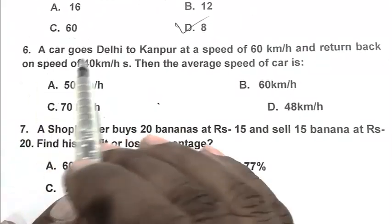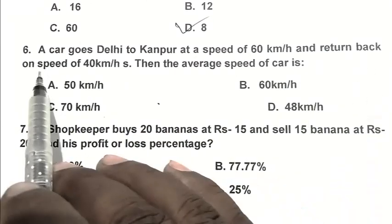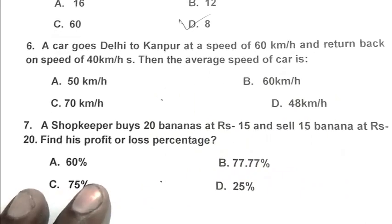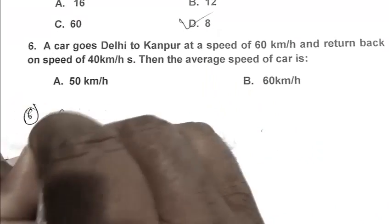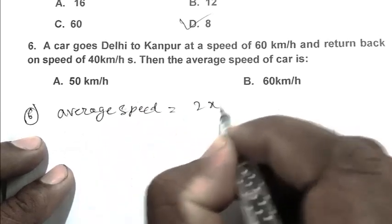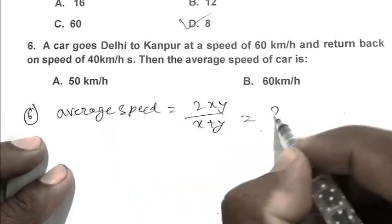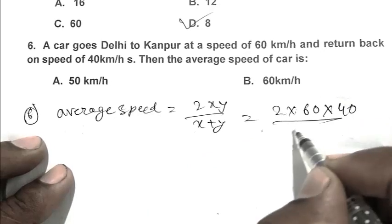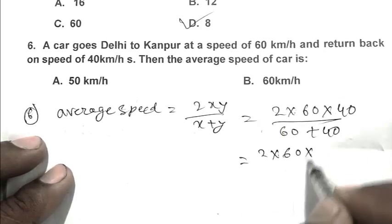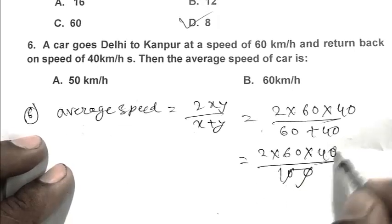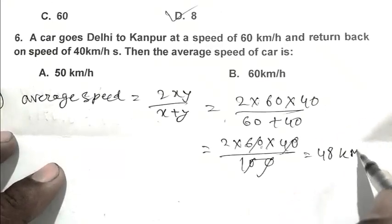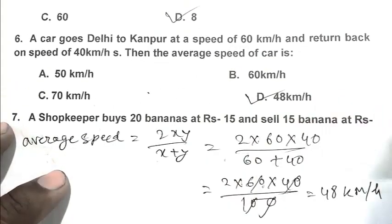Question number 6: A car goes Delhi to Kanpur at speed of 60 km per hour and return back on speed of 40 km per hour. Then the average speed of car is. We can calculate it from formula: Average speed is 2xy by x plus y. 2 multiplied by 60 multiplied by 40 by 60 plus 40, that is 48 km per hour. D is the right answer.